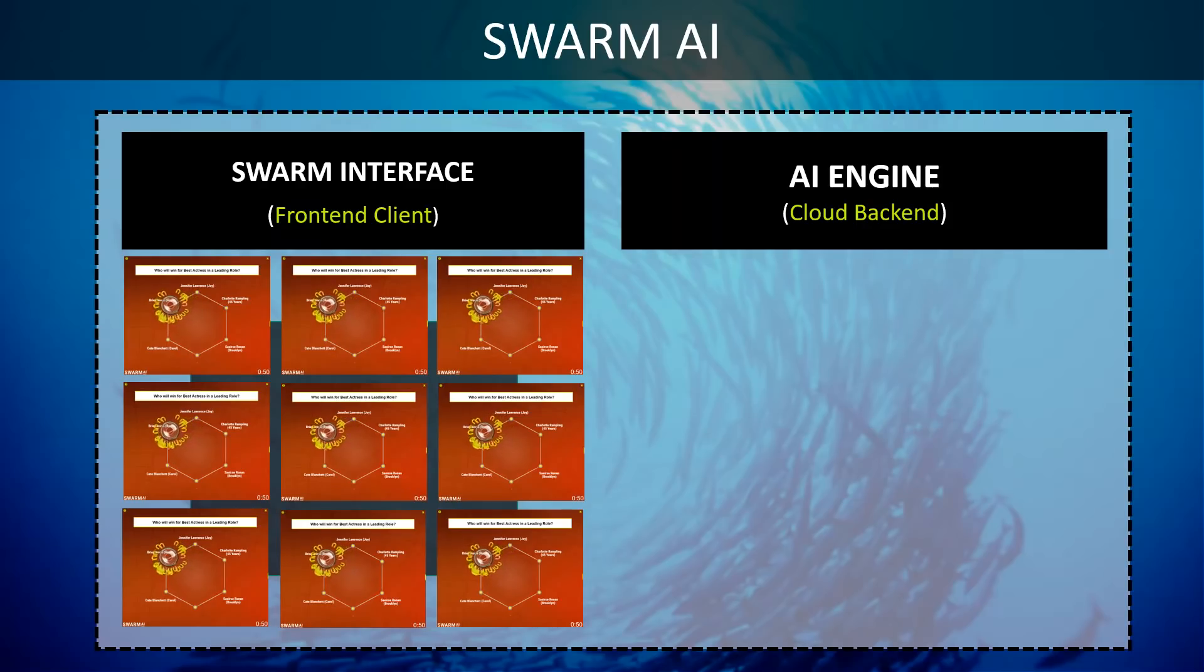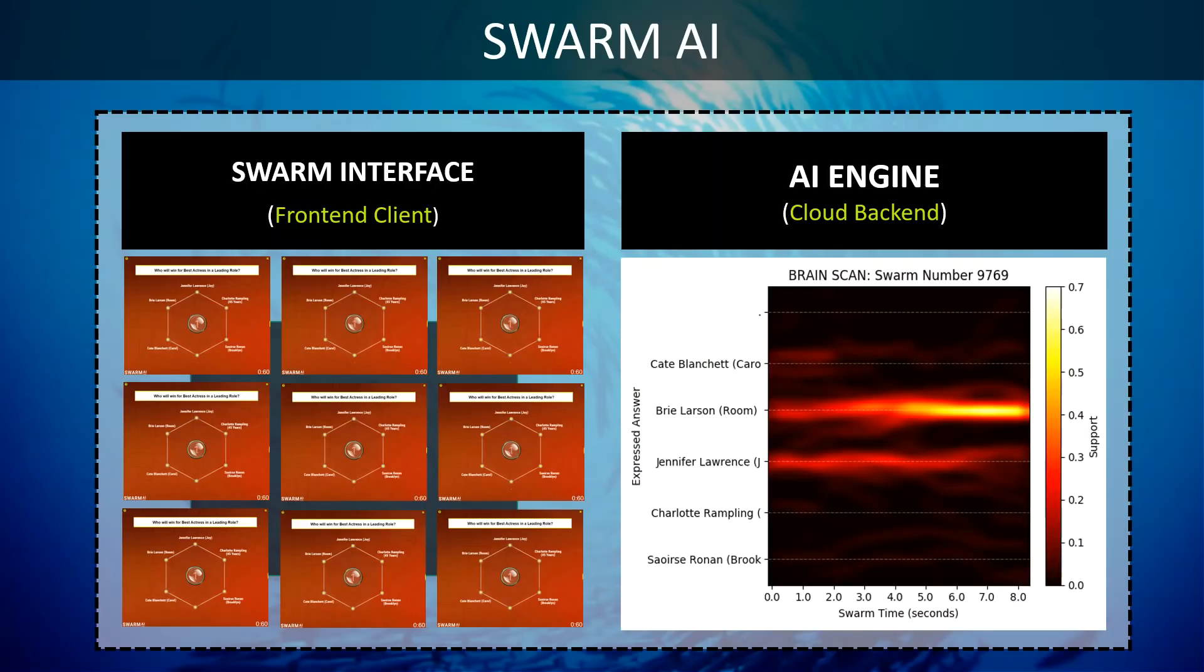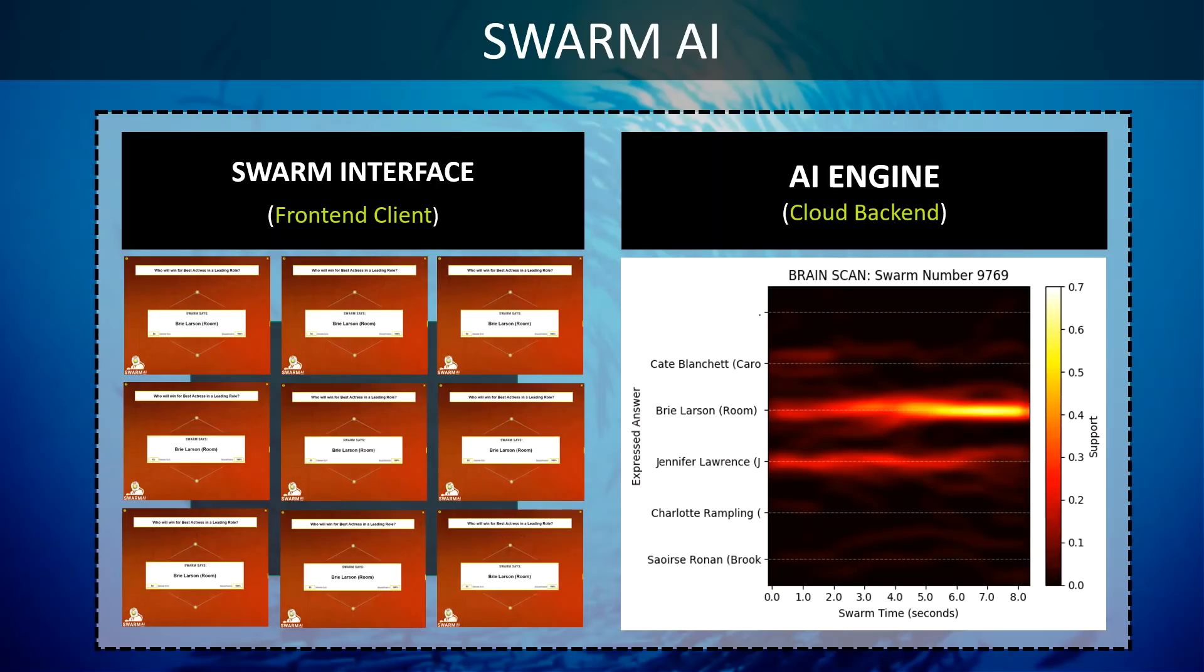And all of this data is being processed in real-time by the AI engine, which is watching the behaviors of every participant, evaluating the strengths of their conviction, the level of their confidence and uncertainty, whether they're entrenched or flexible or ambivalent. This image is called a brain scan because it shows how the AI engine sees the behaviors of all the participants in real-time as they wrestle with the issue at hand.